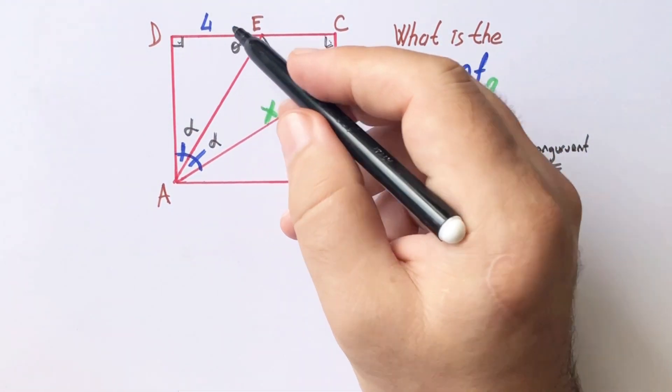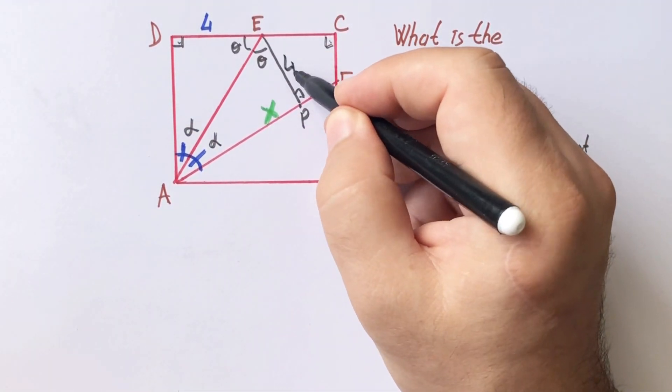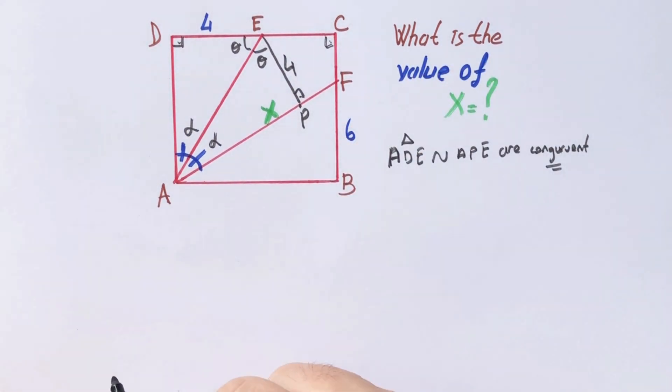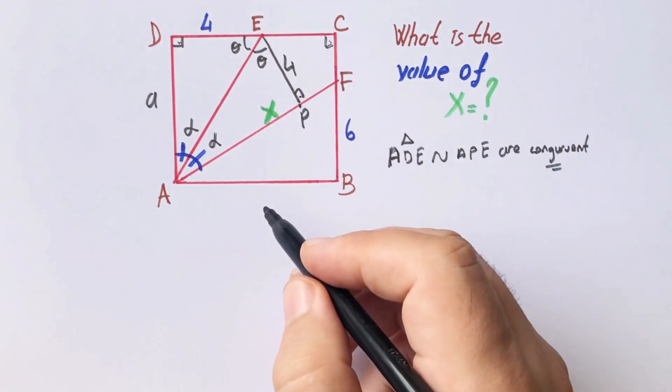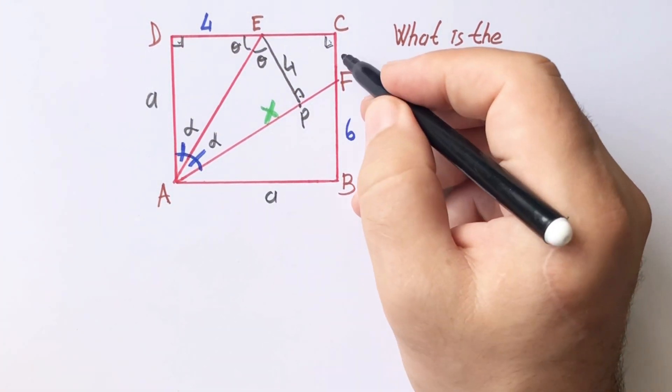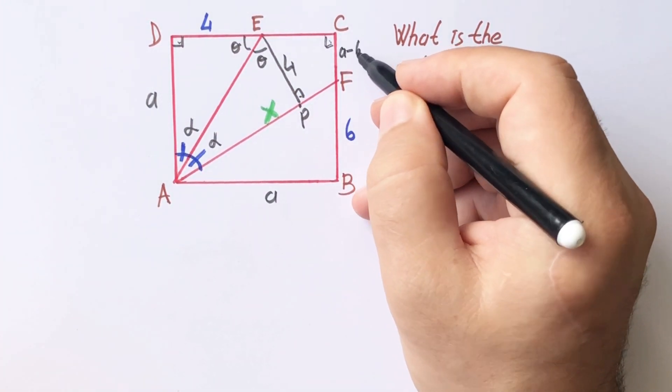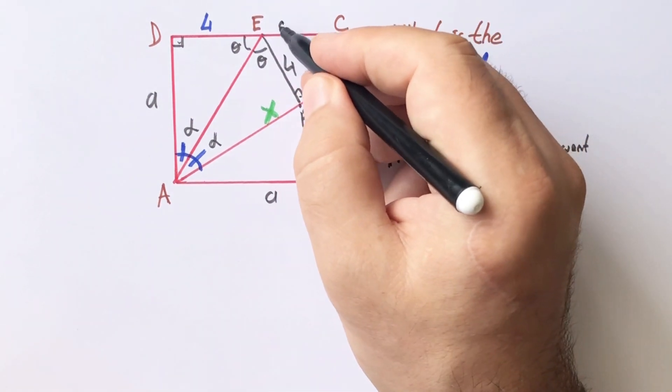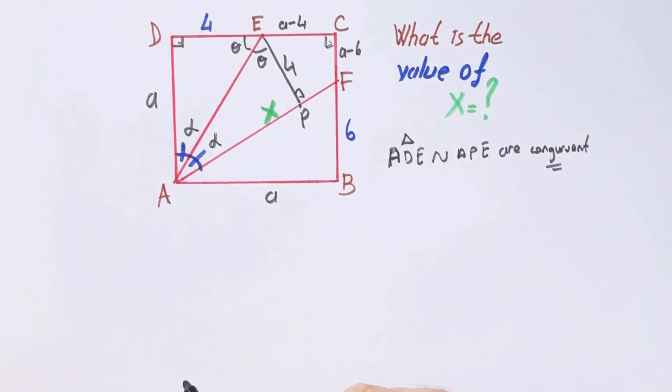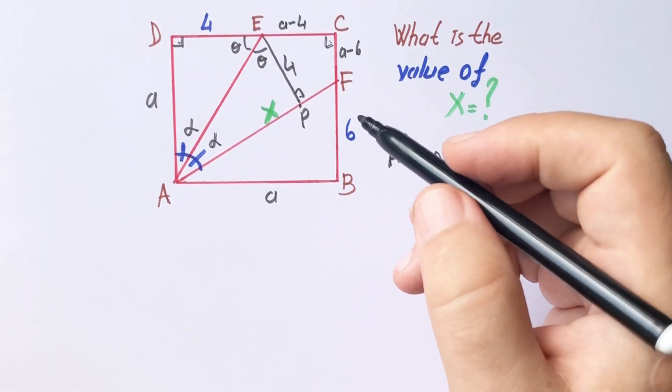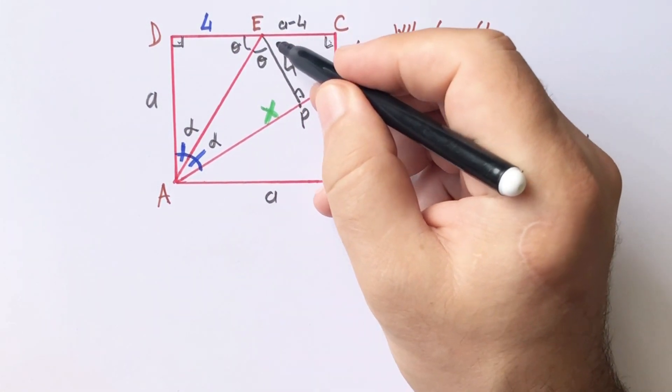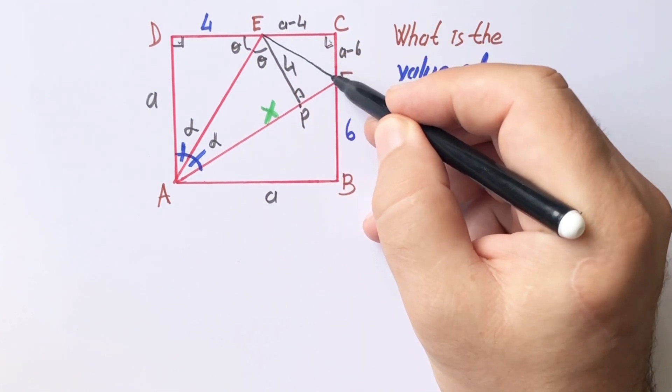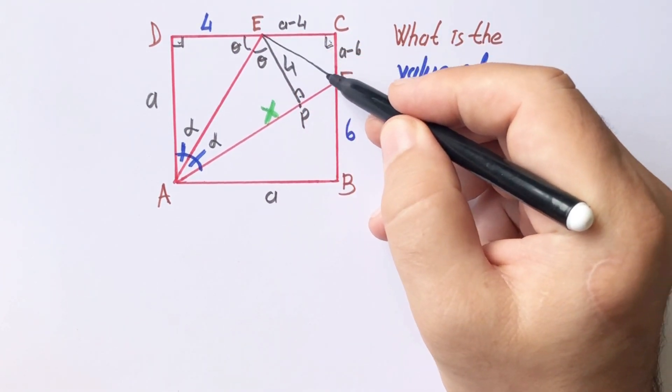If here is four units, this length must be four units, and let's call here a unit. So here is a, and this length must be a minus six, and here must be a minus four. If you notice that we have one quadrilateral, that means if we connect here.